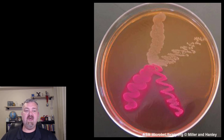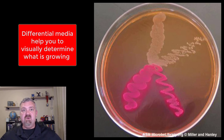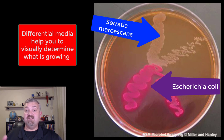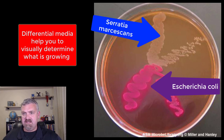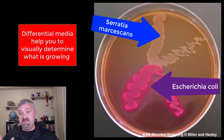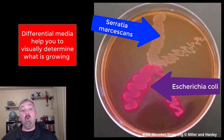MacConkey's agar is also a differential media, meaning you can visually diagnose or see something that tells you about what's growing. It has a pH indicator in it as well. Looking at the top, we have Serratia marcescens — you can see that faint red look, especially on the left — which does not ferment lactose, so it's not turning hot pink. On the bottom, this would be E. coli, which is fermenting lactose; as it does so, it causes a pH change and a color change. So this plate kept gram positives out, helped gram negatives grow, and just by looking at it we can tell if they are lactose fermenters or not.